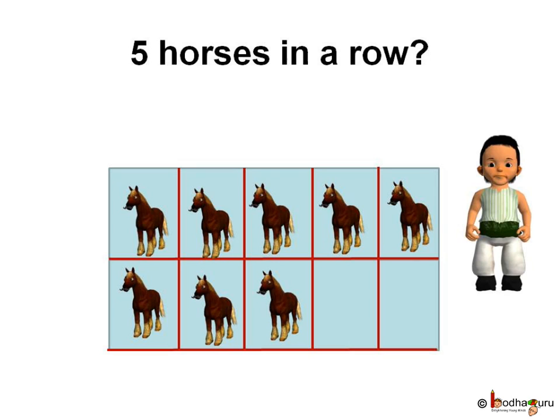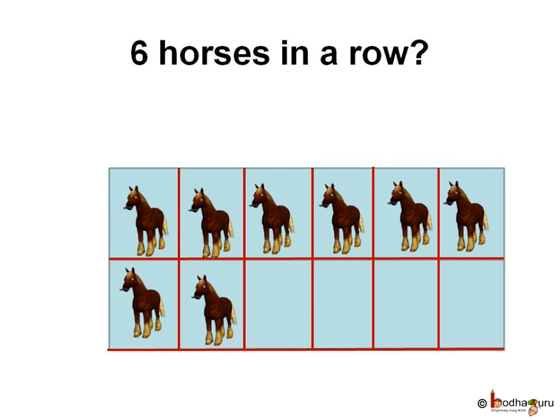He then tried to arrange 5 horses in a row. But this too was a waste of space as the second row had only 3 horses, and not all the rows have the same number of horses. Same with the 6 horses arrangement in a row — here the second row had only 2 horses.